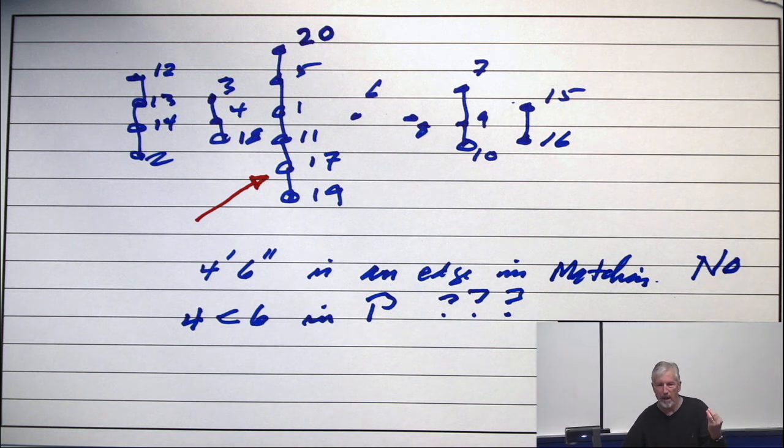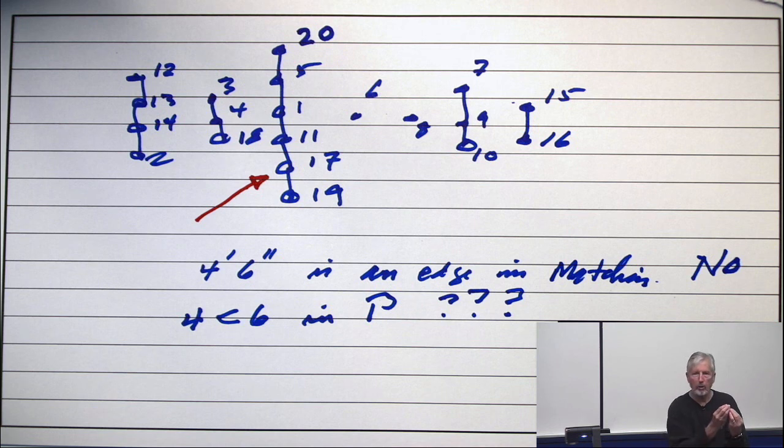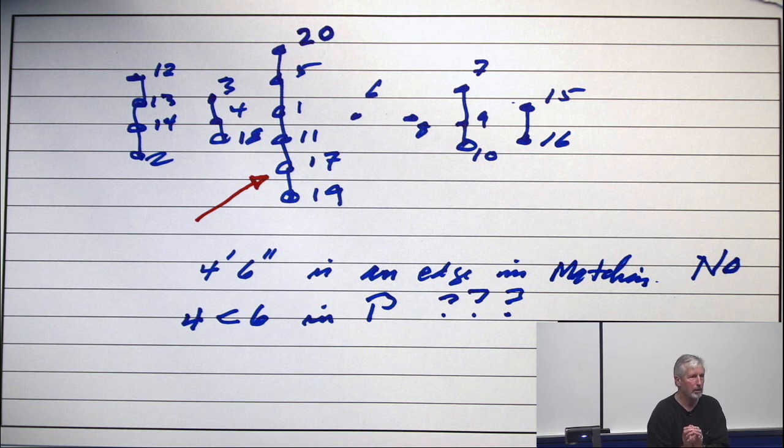So in the maximum matching, there's no flow coming in to 20. That's an edge with capacity one that's got no flow on it. You will label 20 prime. You will label 20 prime.